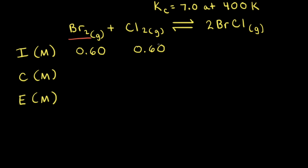For the reaction, bromine gas plus chlorine gas goes to BrCl. Kc is equal to 7.0 at 400 Kelvin. If the initial concentration of bromine is 0.60 molar and the initial concentration of chlorine is also 0.60 molar, our goal is to calculate the equilibrium concentrations of Br2, Cl2, and BrCl.